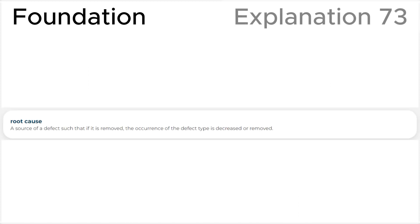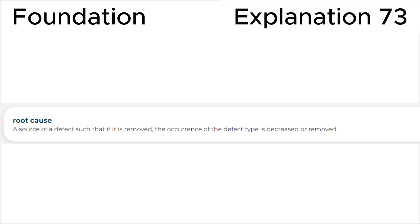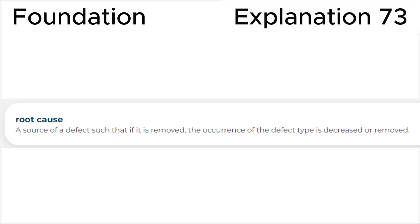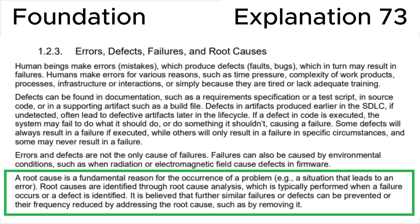Let's look at the definition of root cause in the ISTQB glossary. Root cause is a source of a defect such that if it is removed, the occurrence of the defect type is decreased or removed. Secondly, let's look at section 1.2.3 — errors, defects, failures and root causes — in the ISTQB syllabus, where we can see an explanation of root causes. I suggest you figure it out on your own.